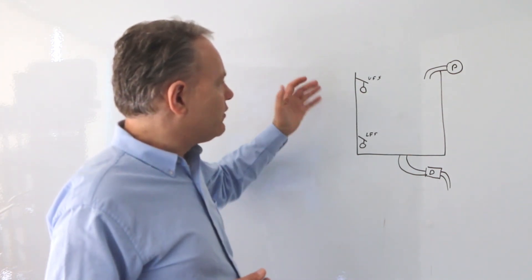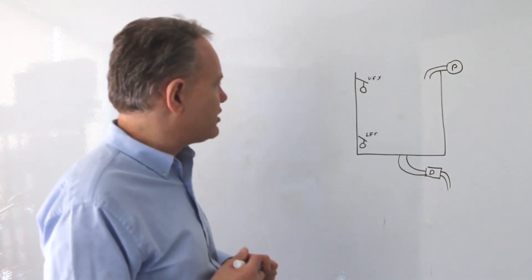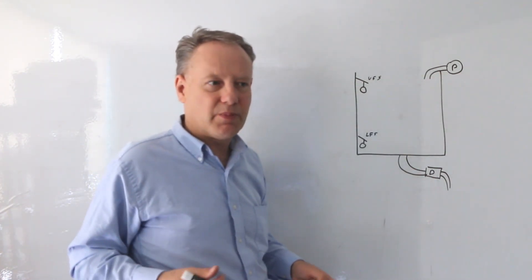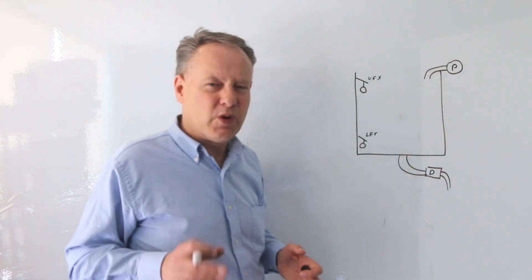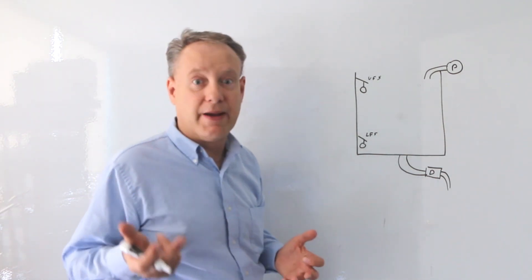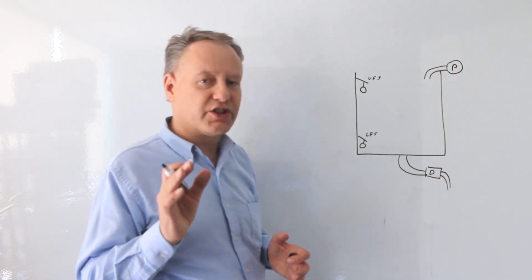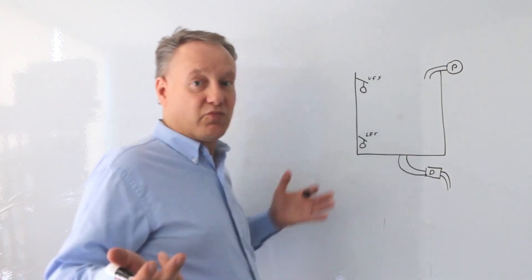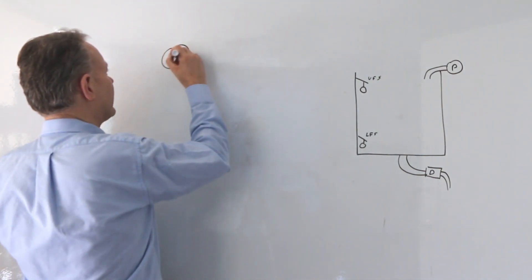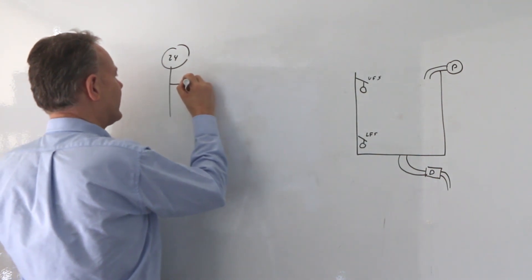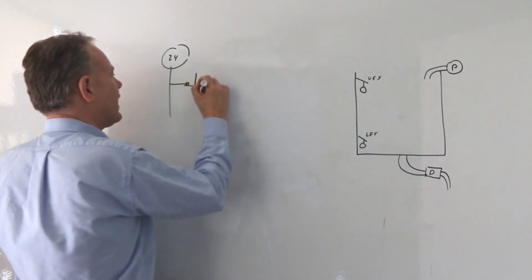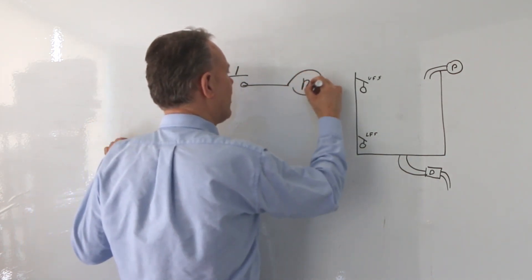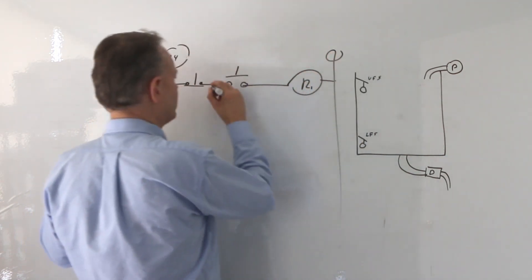We're going to put these into the application and look at when we want the pump to come on. We want the pump to come on when the tank gets empty, and we probably want to start the cycle with a button. So we're going to put a holding circuit in to start it with a standard stop/start rung. I'm going to draw 24 volts, put a stop in here and a start in here, and put my relay R1.